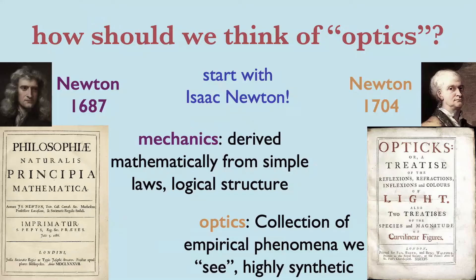When we talk about optics, we're thinking of a later Newton — his Opticks was published in 1704, describing his experiments over the course of his life. Although he talks about axioms and proofs, it's really a collection of empirical phenomena — highly synthetic. When we think about optics, we can't separate it from the physiology of human vision, because it's what we see. We're talking about the full electromagnetic spectrum, but there's this tiny little band we call optics, because our eyes happen to be particularly sensitive in that frequency range — the maximum emission from the sun.